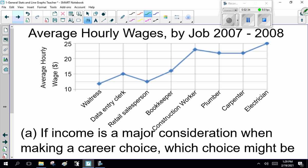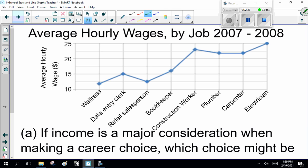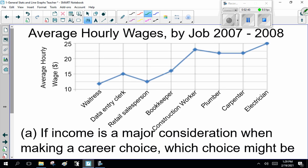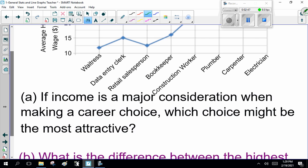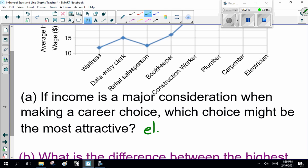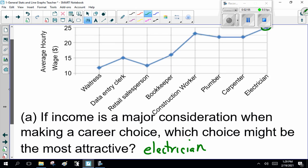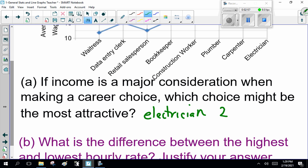If income is a major consideration when making a career choice, which choice might be the most attractive? What would you make the most money? Electrician. And why? What's it making, about 25 an hour? That's right.